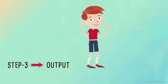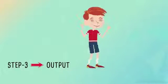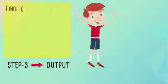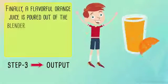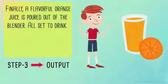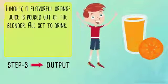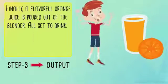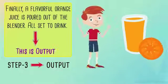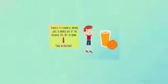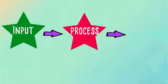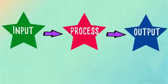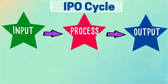Step 3 is the output. Finally, a flavorful orange juice is poured out of the blender — all set to drink. This is the output. In the same way, a computer works by following the IPO cycle.